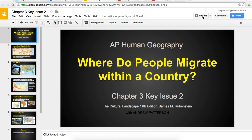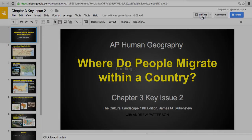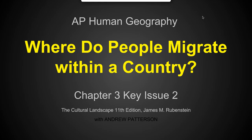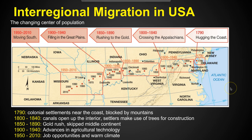Welcome to AP Human Geography, Chapter 3, Key Issue 2, where we look at where people migrate within a country. We look at our own country — interregional migration within the United States of America.